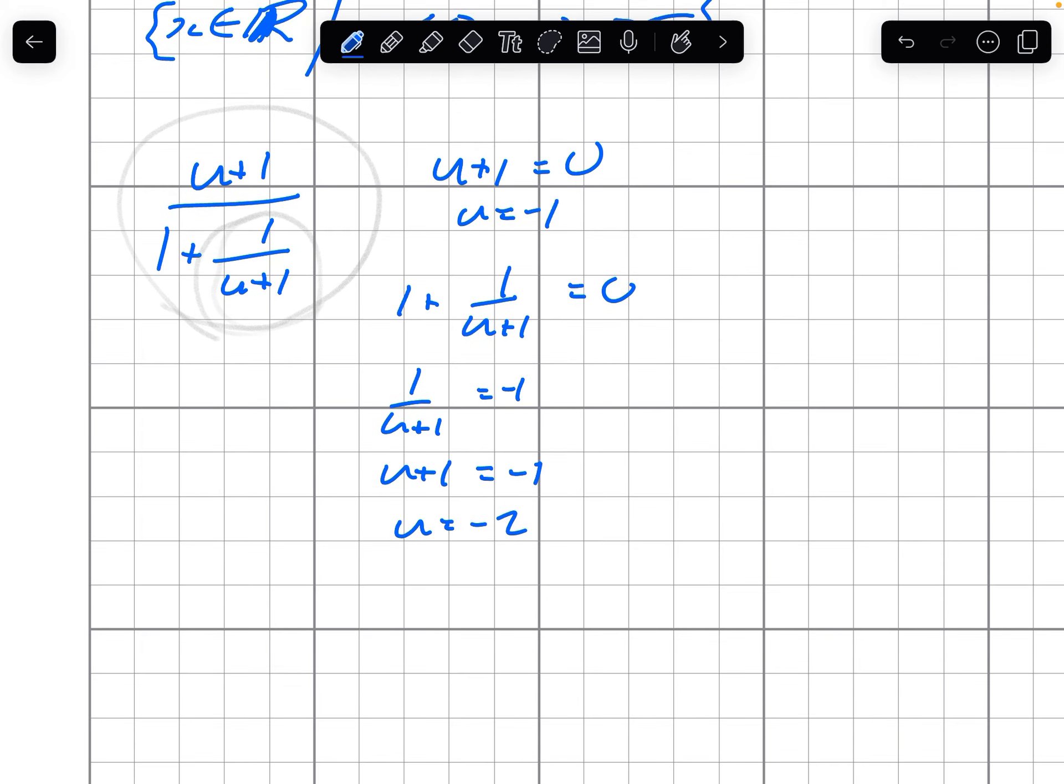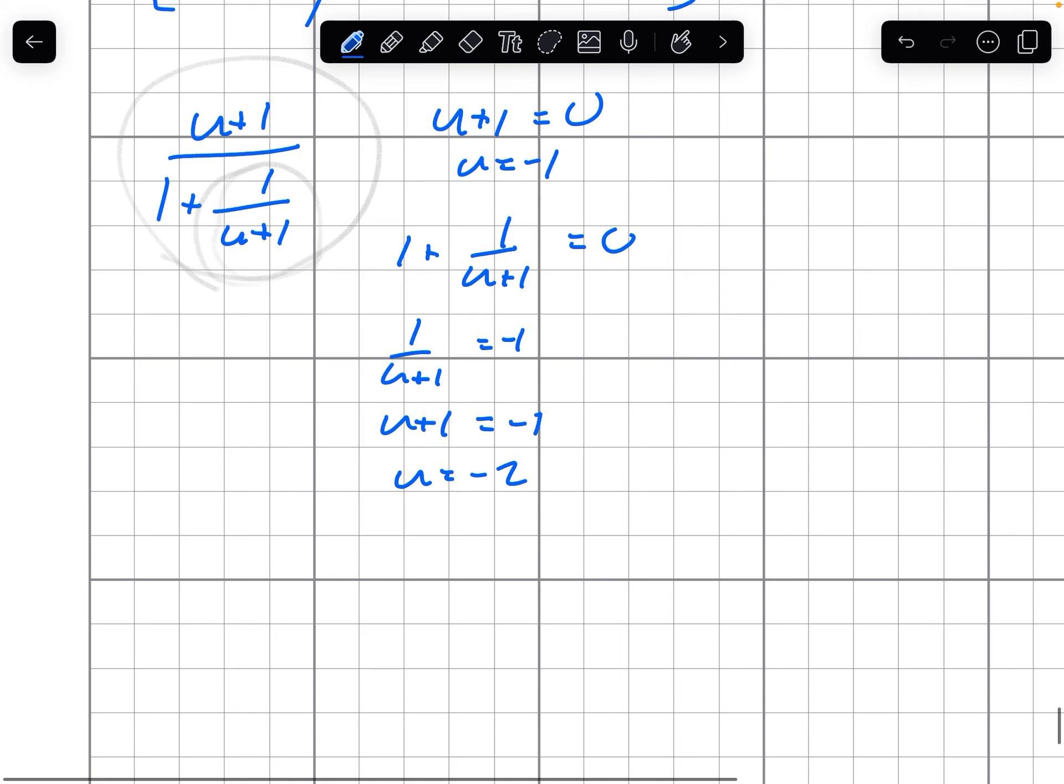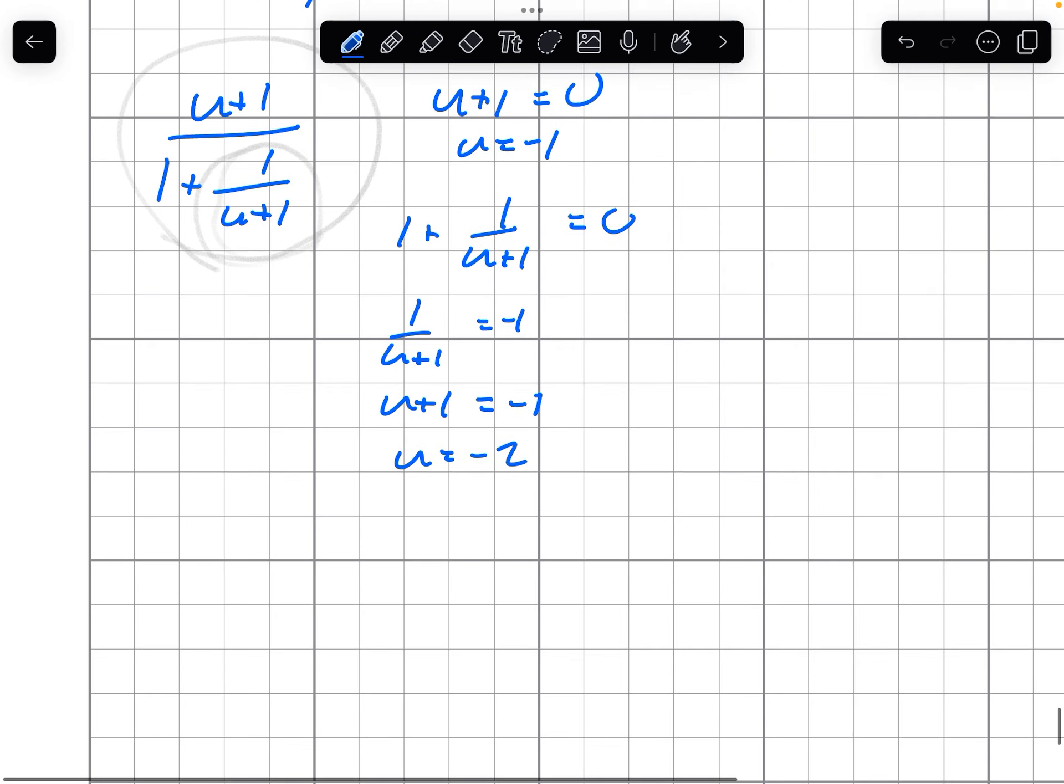So these are our two places where we would have asymptotes. So our domain is u in the reals, such that u does not equal negative 1 or negative 2. Or it's the reals excluding negative 1 and negative 2.